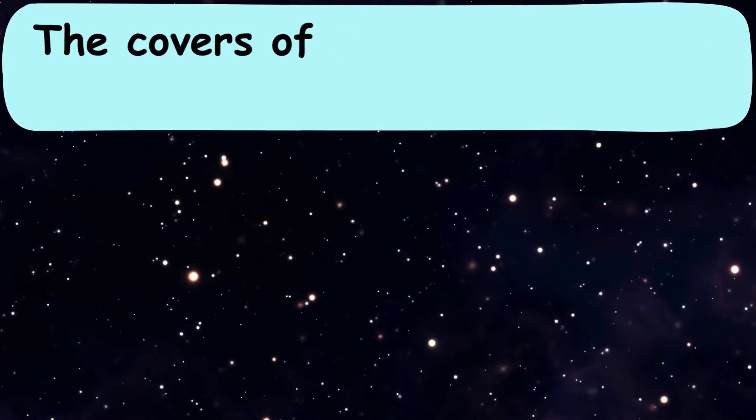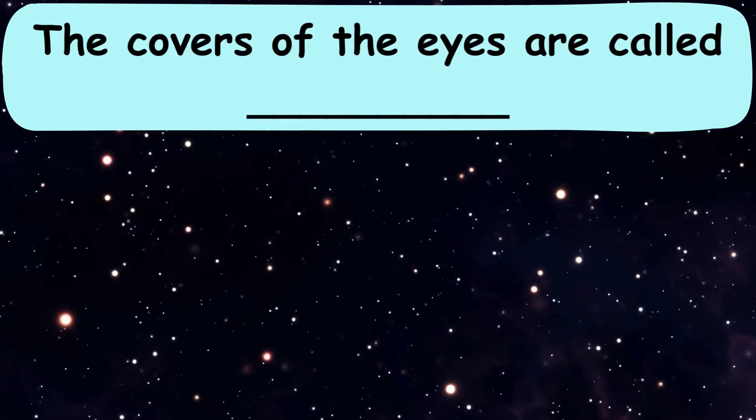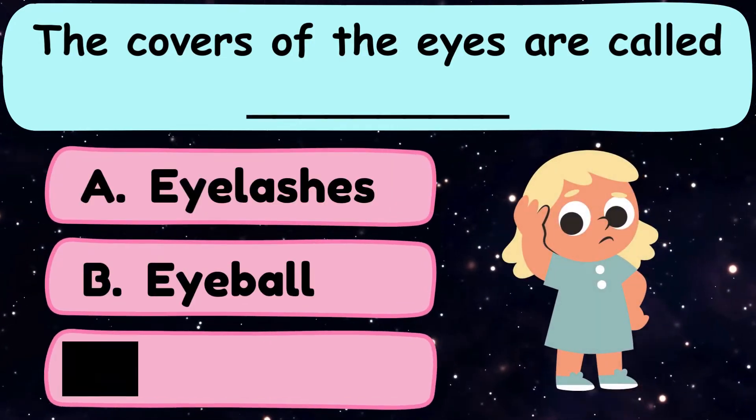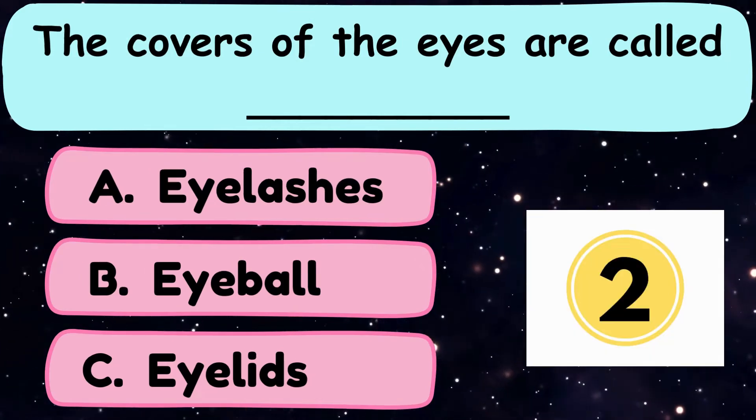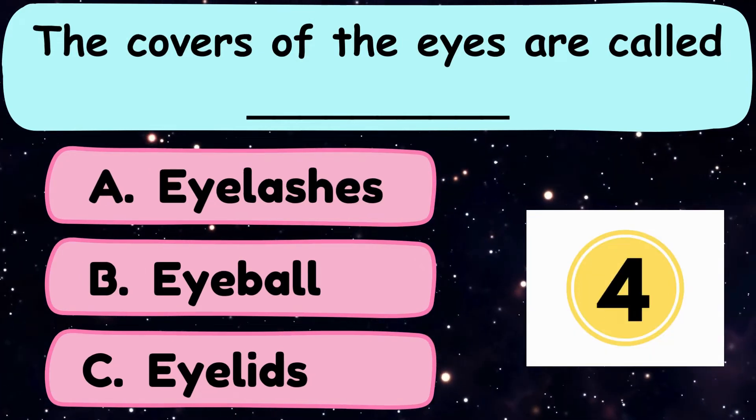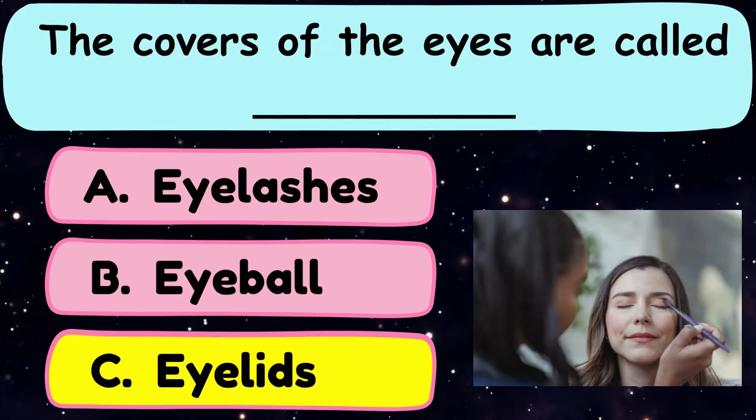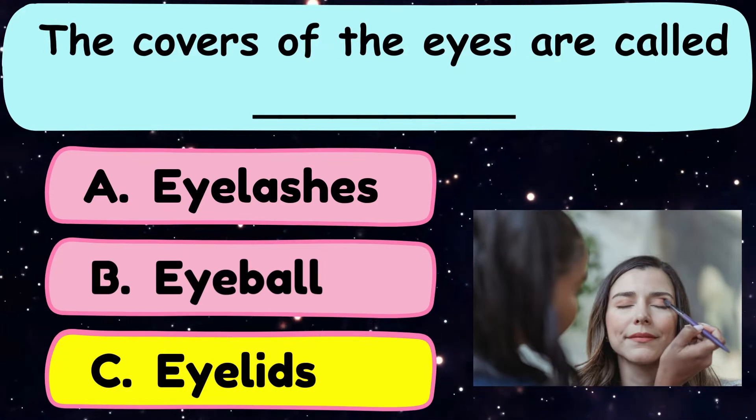Question number 14. The covers of the eyes are called dash. A. Eyelashes, B. Eyeball, or C. Eyelids? And the correct answer is option C. Eyelids.